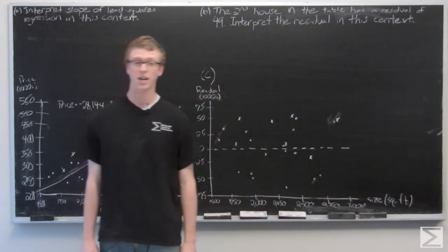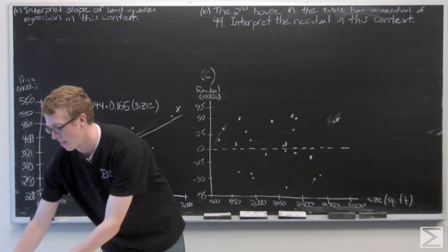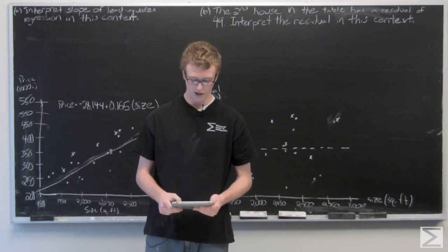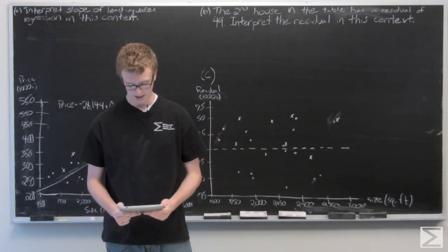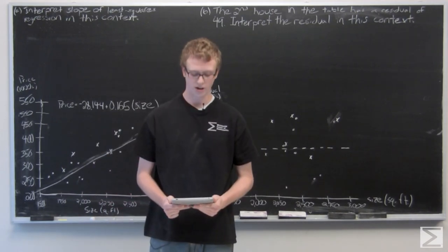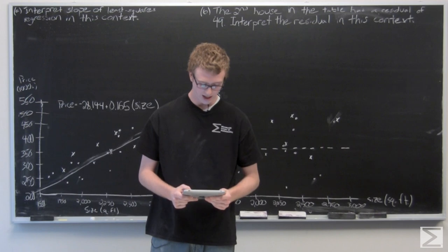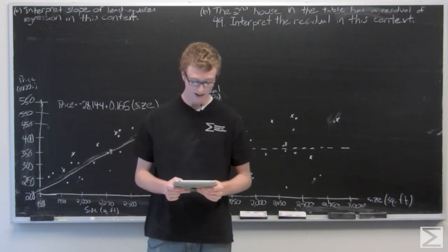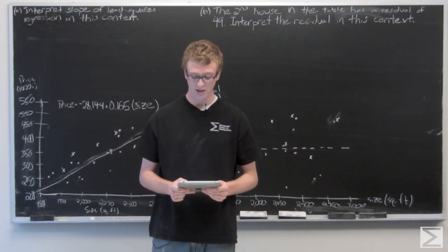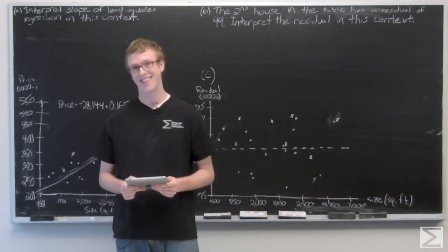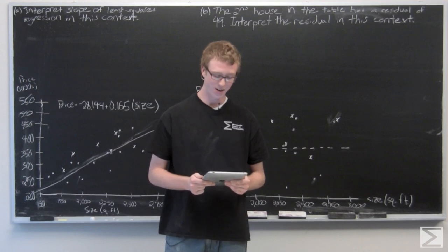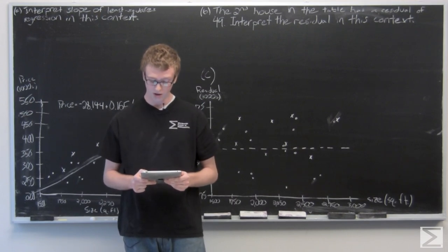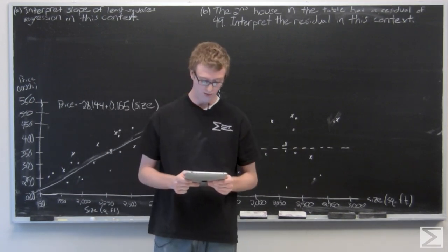We're going to take another look at an AP Statistics question. This is the 2010 exam, Form B, question number six. In this question, we're given a nice big table with a bunch of values. It's going to be a regression type question. A real estate agent is interested in developing a model to estimate the prices of houses in a particular part of a large city. She takes a random sample of 25 recent sales and for each house records the price in thousands of dollars, the size of the house in square feet, and whether or not the house has a swimming pool. This information along with regression output for a linear model using size to predict price is shown below and on the next page.